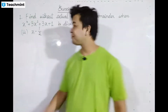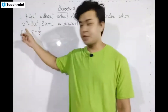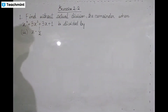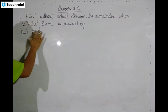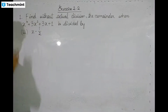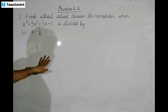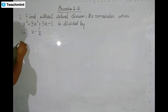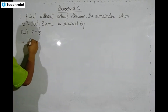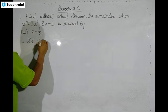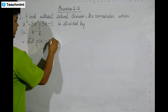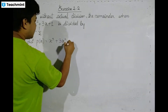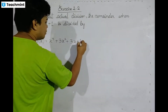This is Exercise 2.2, question 1, Roman numeral 3. Let p of x equal x cube plus 3x square plus 3x plus 1.